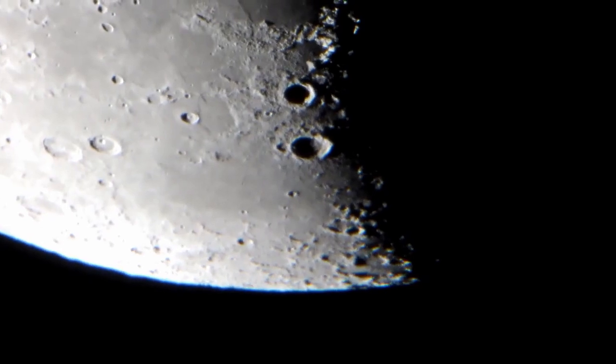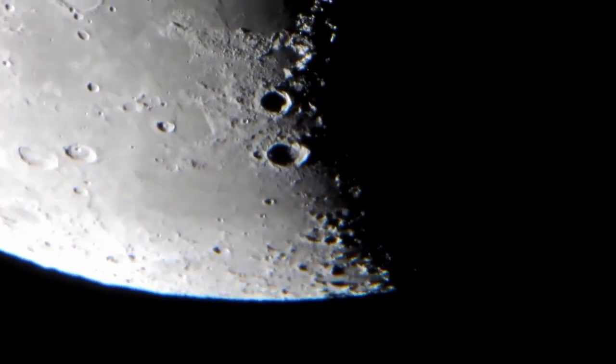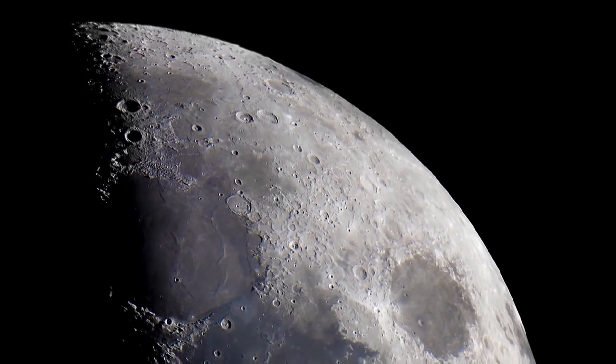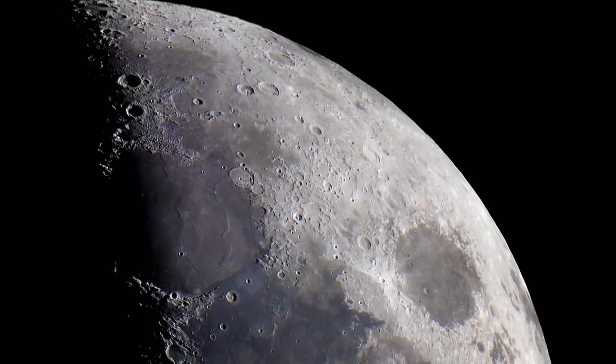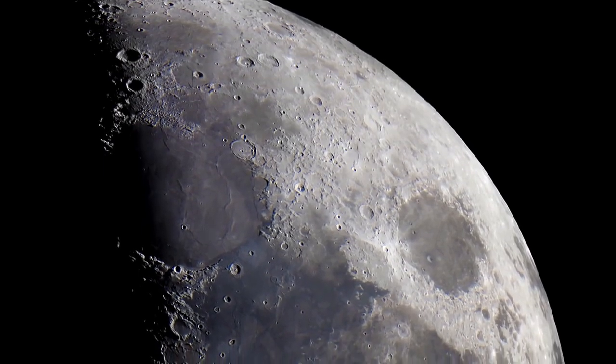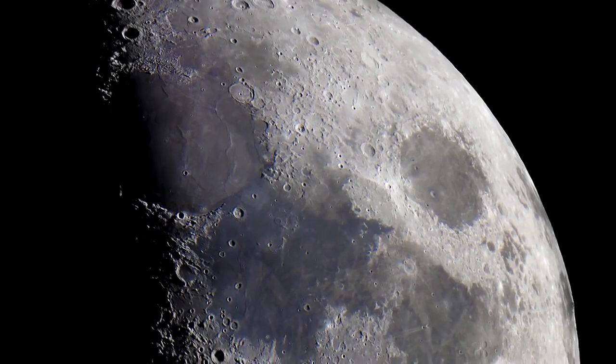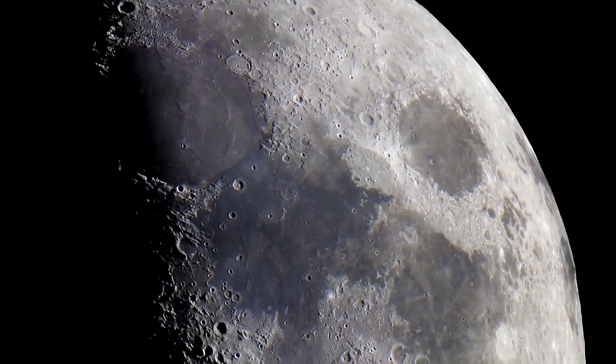The footprints on the moon will be there for 100 million years. The moon has no atmosphere, which means there is no wind to erode the surface and no water to wash the footprints away. This means the footprints of the Apollo astronauts, along with spacecraft prints, rover prints, and discarded material, will be there for millions of years.